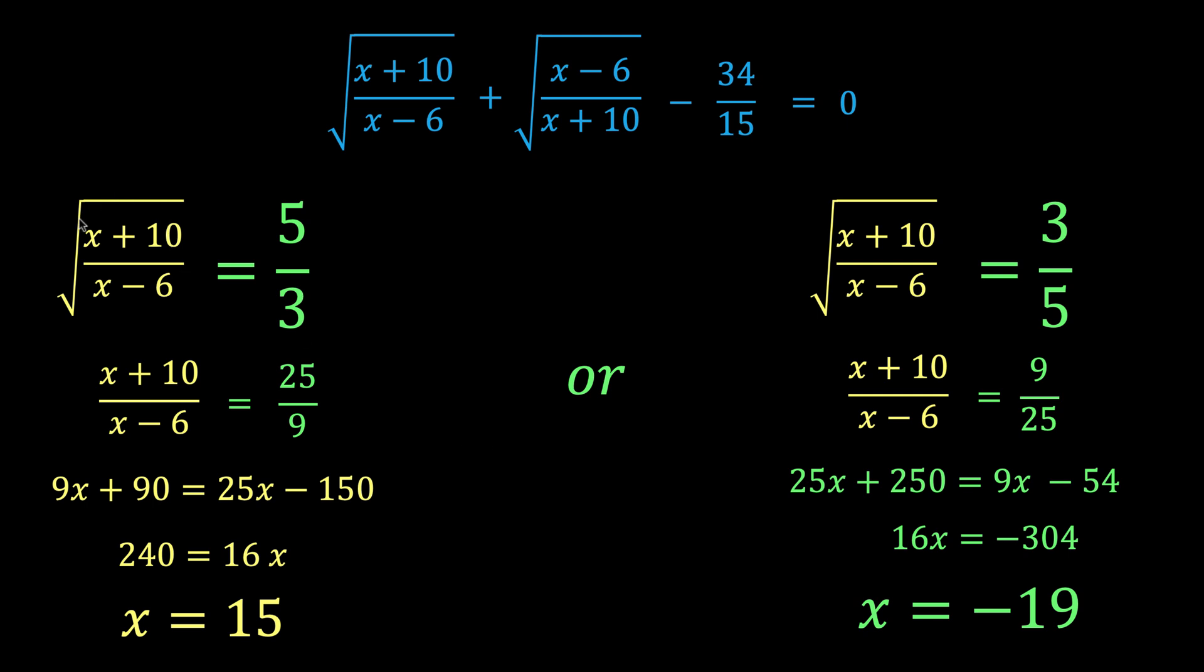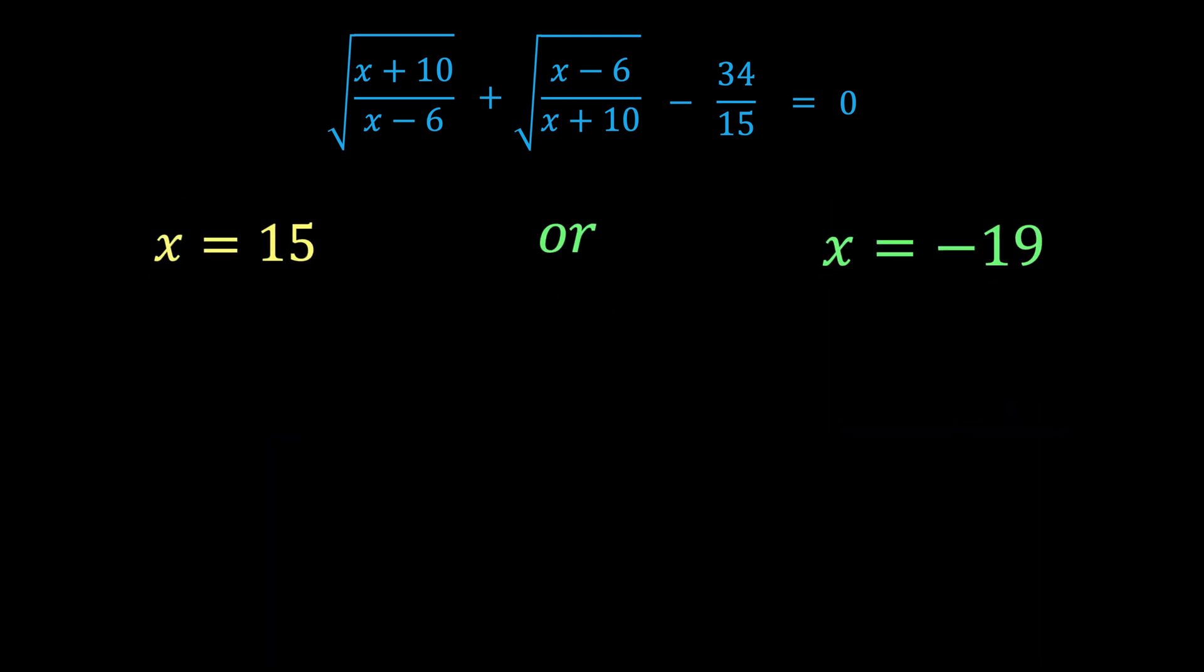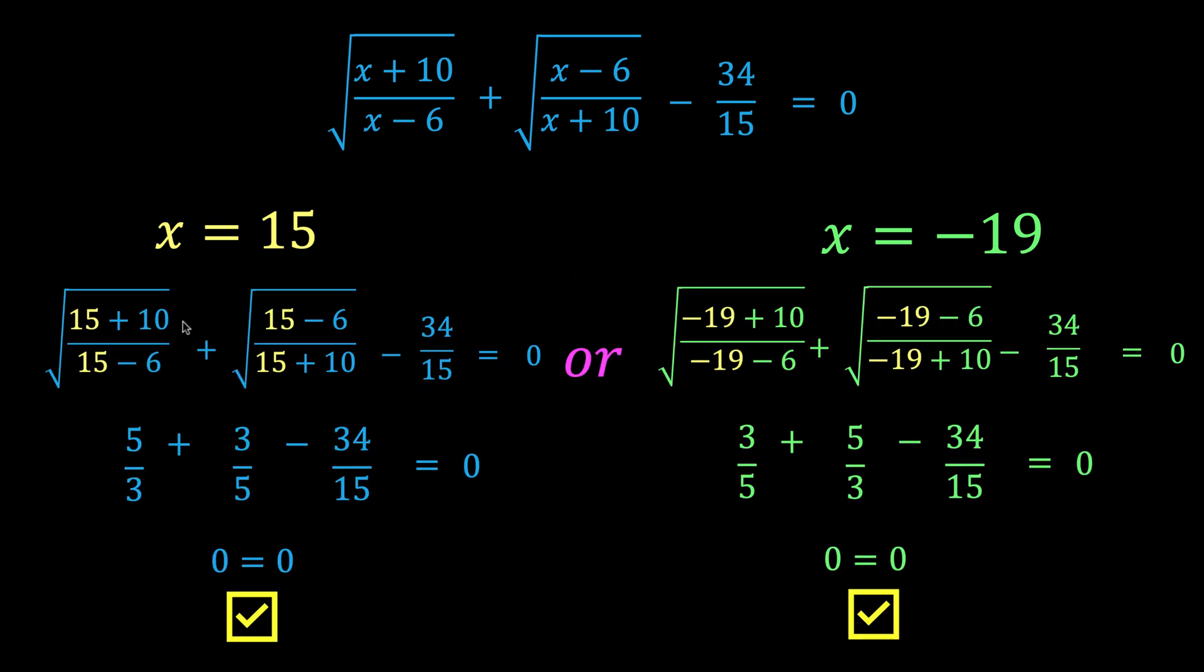Now, since we square both sides of the equation, both in the first and in the second equations, there's a possibility that we introduce an extraneous root. And so, we need to perform checking. Let's check if x equals 15 or x equals negative 19 satisfy the original equation. And so, we now have these results. If x equals 15, we arrive at a true statement. If x equals negative 19, again, we also arrive at a valid equation. And therefore, our conclusion is the roots of the original equation are x equals 15 and x equals negative 19.